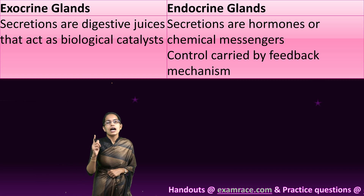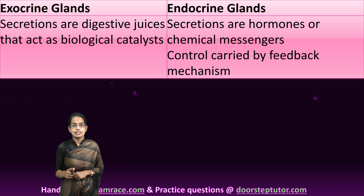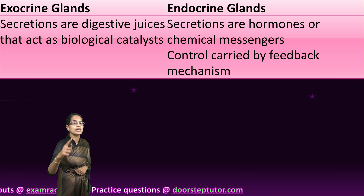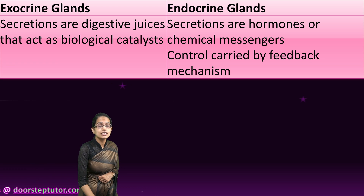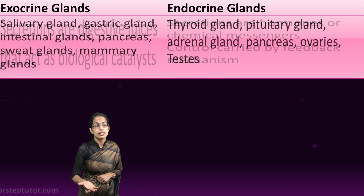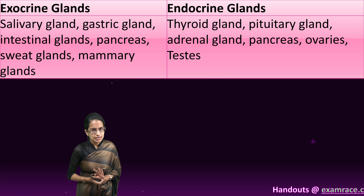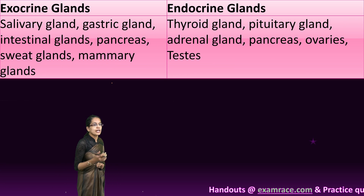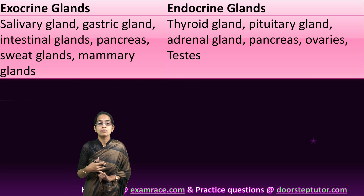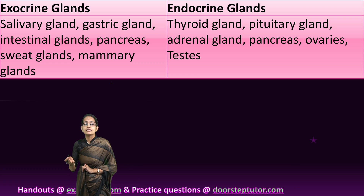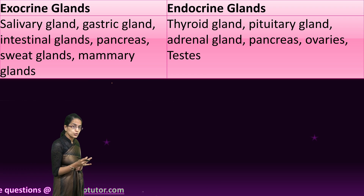Exocrine gland secretions act as catalysts — they enhance the rate of reaction or the way in which a reaction progresses. Secretions of digestive juices are good examples of exocrine glands. Common examples of exocrine glands include salivary glands, sweat glands, mammary glands, gastric glands, and intestinal glands.